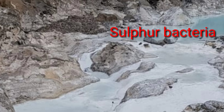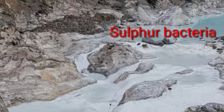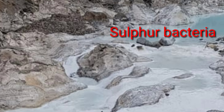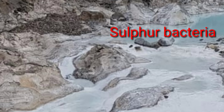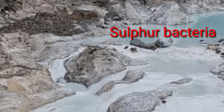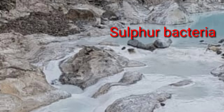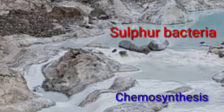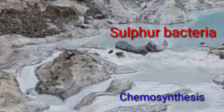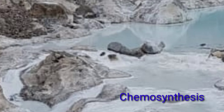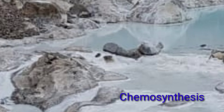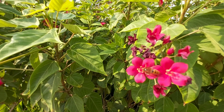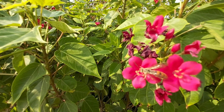All producers on earth do not depend on sunlight. The sulfur bacteria seen on land and in water are an example. They produce energy by breaking down chemical compounds. This process is called chemosynthesis.